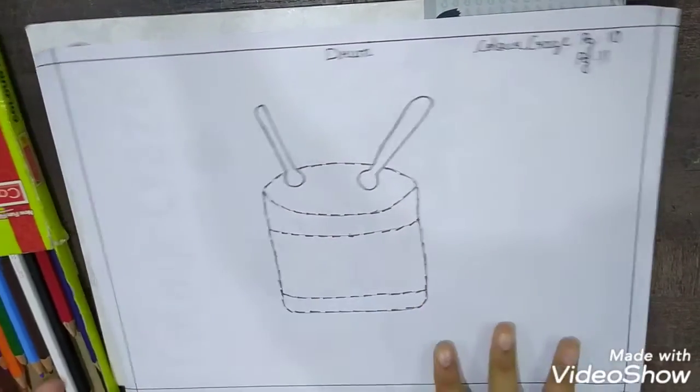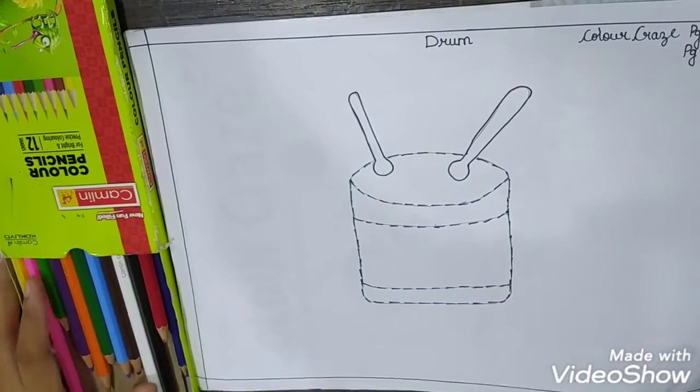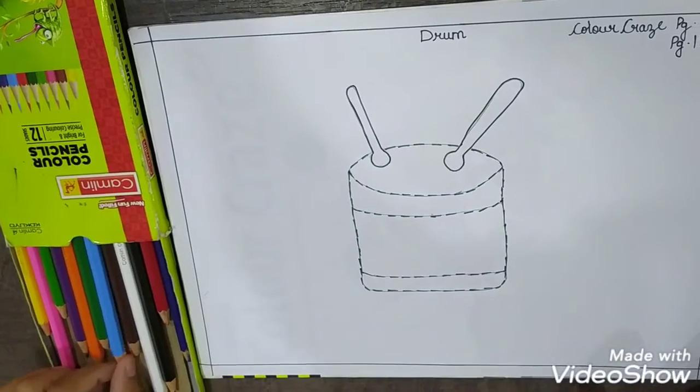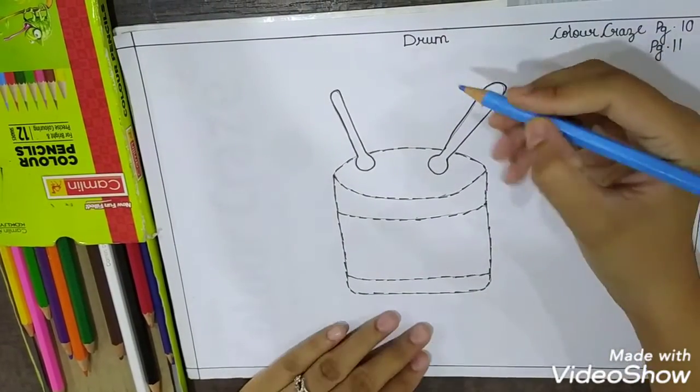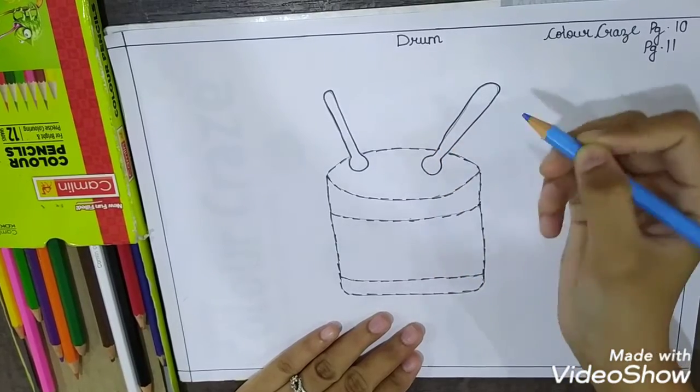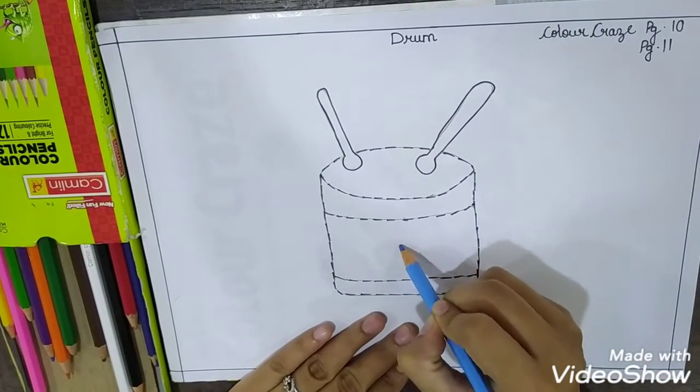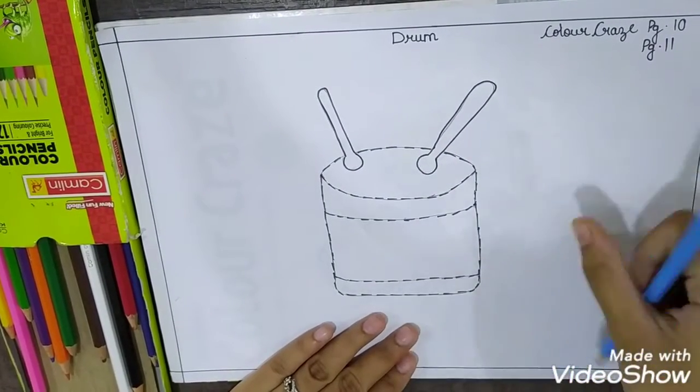I have taken color pencils. You can take crayons or any other colors which you have. Okay. I am taking light blue to color this drumsticks. Okay. And even this the middle part I am going to color.